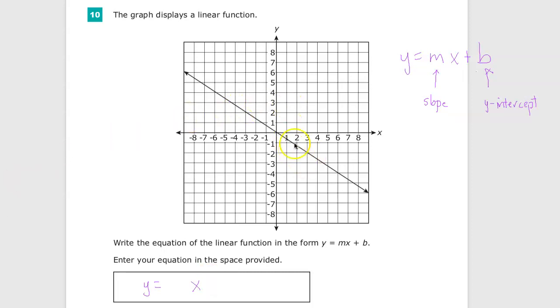For slope, y intercept's easy, obviously. You just go to the y-axis, and you find where it intercepts right there. Intersects that line as the intercept. So it's at zero.